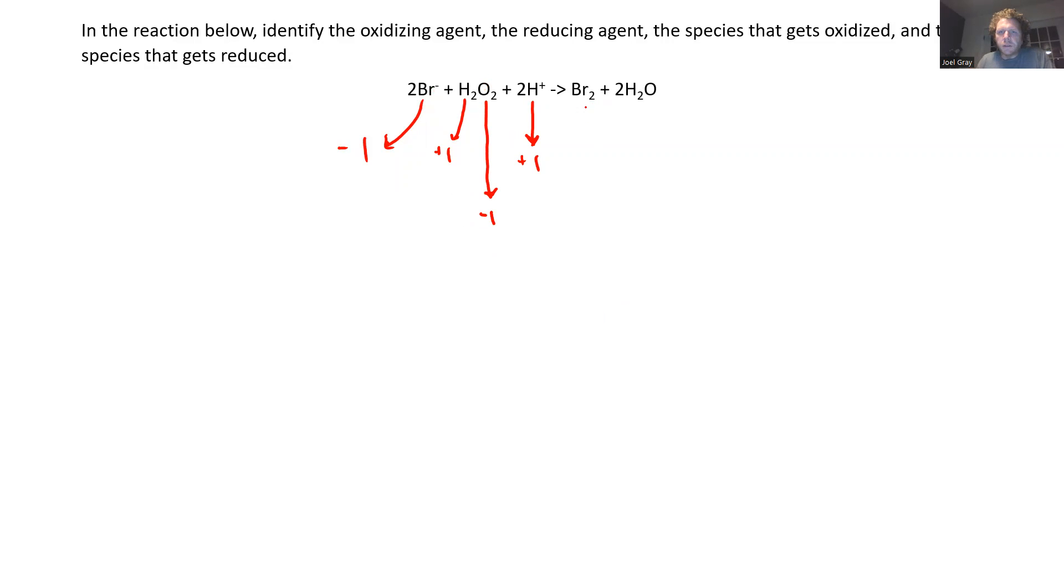Now on our product side, we've got bromine, which has a zero charge. We have hydrogen, which is going to maintain a plus one charge because there's two of them, and then oxygen. We are not in a peroxide, so oxygen can revert to its normal minus two charge.